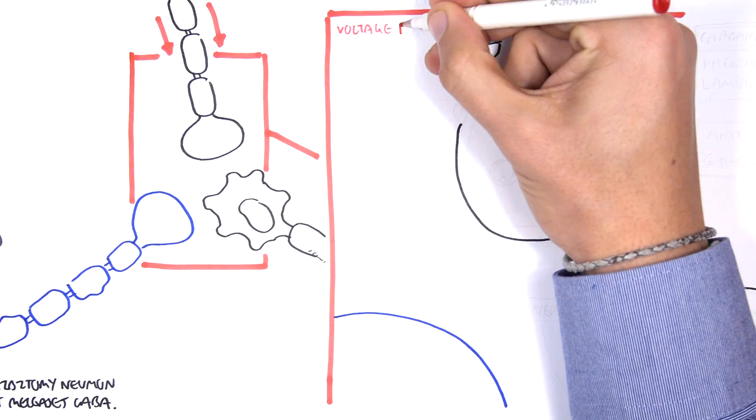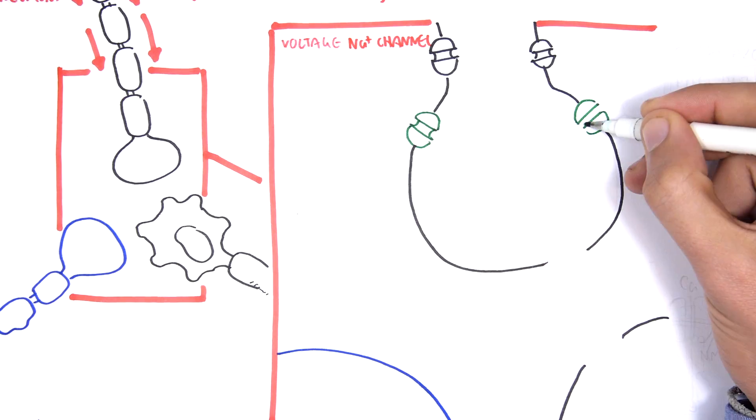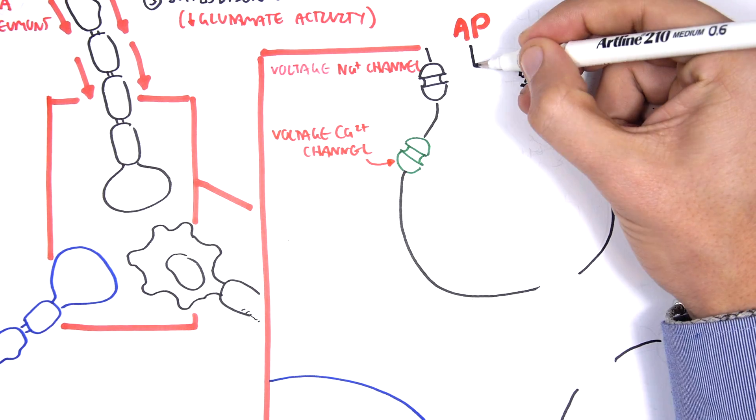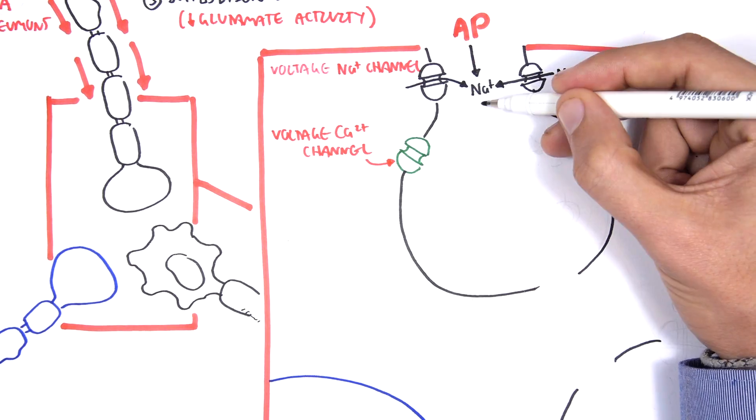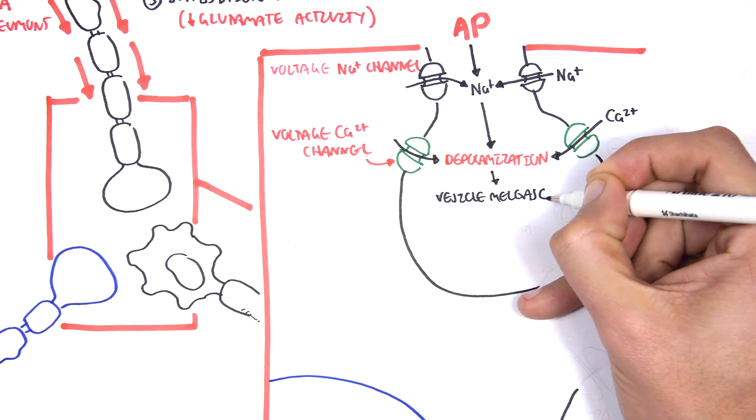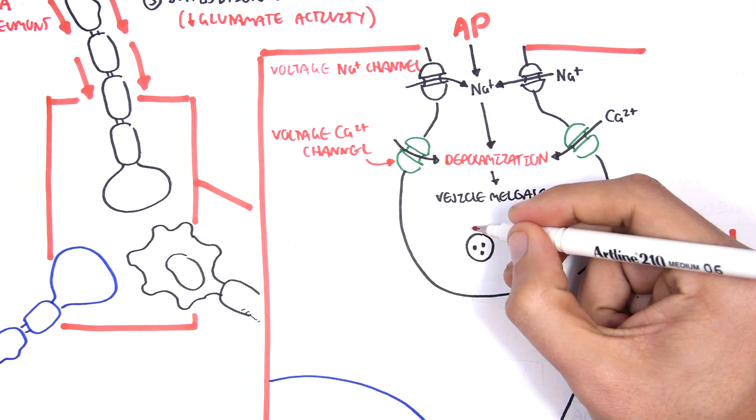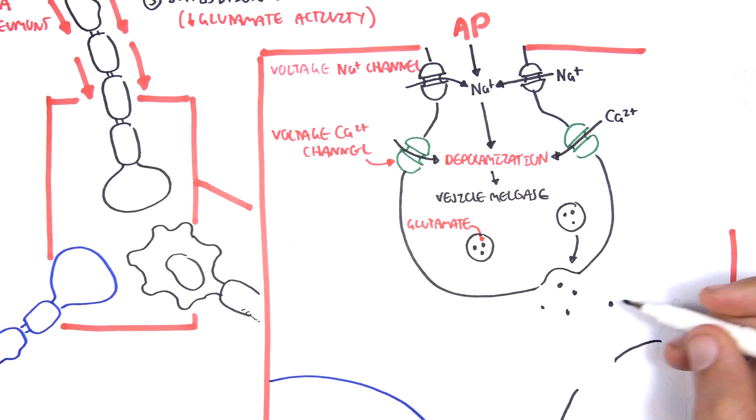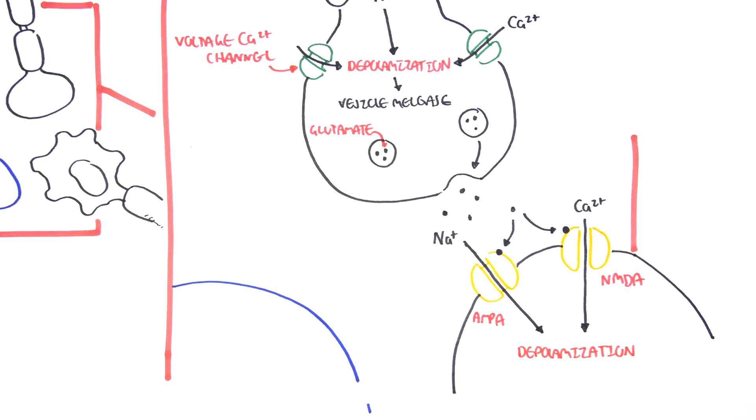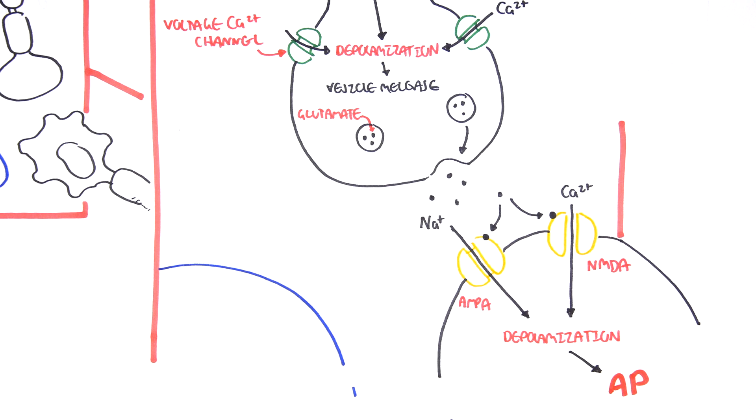When an action potential comes down, it causes an influx of sodium via voltage-gated sodium channels. Once it hits the terminal, voltage-calcium channels open up, causing calcium to come in. This leads to depolarization, resulting in the vesicles in the terminal bulb releasing glutamate. Glutamate binds onto receptors in the postsynaptic neuron.